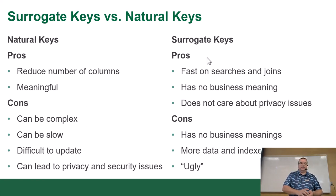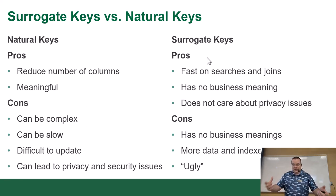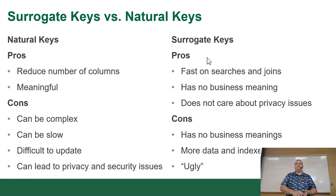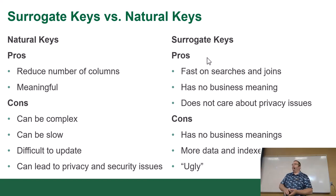First, I'm going to talk about natural keys. A natural key is a key that gets its value from the data itself — in other words, it relates to something real. Email address, social insurance number, passport number, student visa number — those are things you could use as a key. They're called natural keys because they come from a real-world source.